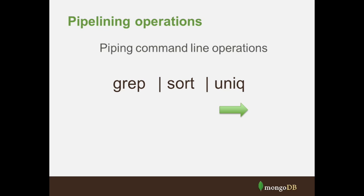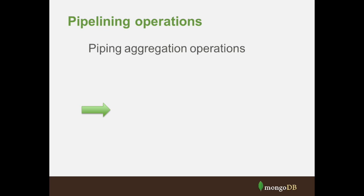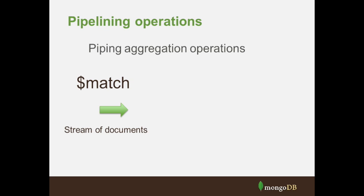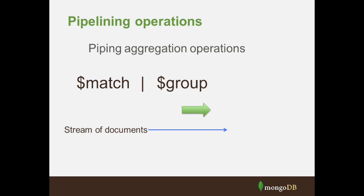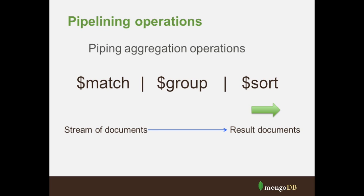We have a similar approach in MongoDB's aggregation framework with our pipeline. We can, for example, begin with a $match, selecting out of our entire database and producing a stream of documents. That stream we can then pipeline into a $group operation, which will group them together, producing aggregates such as averages. And we can then do a $sort operation to sort them into order. This is going to emit a stream of result documents that are not necessarily one-to-one with the input stream — the $group operation emits a different set of result documents than $match did selecting from the database.